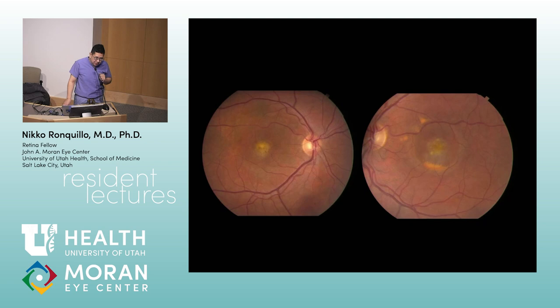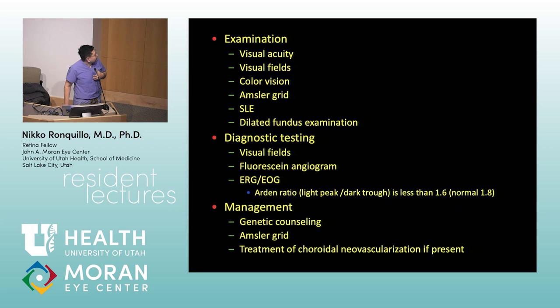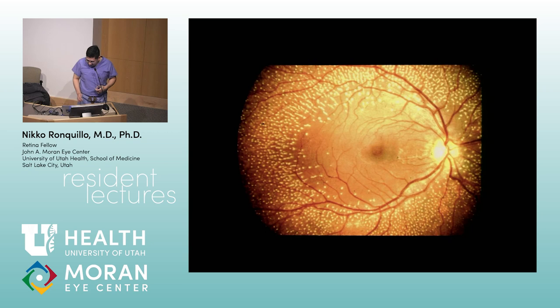Next — Best disease (vitelliform macular dystrophy). Mutation: VMD2 (bestrophin 1). The abnormal test is EOG — Arden ratio less than 1.6 is abnormal. Autosomal dominant inheritance.